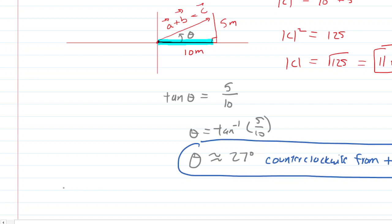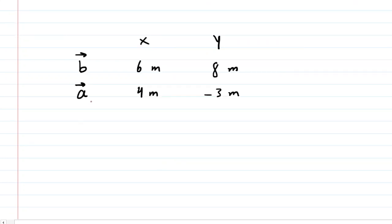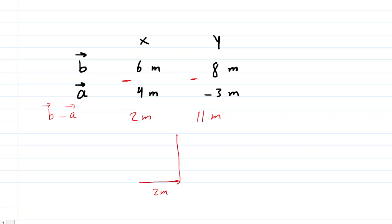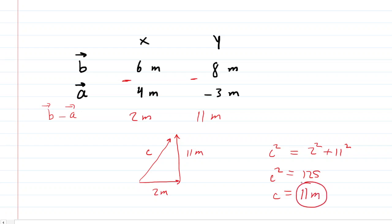Now in Parts G and H, we look at the vector difference B minus A. Setting up the table with Vector B in the first row and Vector A in the second, we subtract: X component is 6 minus 4, giving 2 meters. For Y, we do 8 subtract negative 3, which is 8 plus 3, giving 11 meters. Drawing the right triangle: 2 meters along the positive x-axis, and 11 meters up the positive y-axis. Setting up the Pythagorean theorem, C squared equals 125, and taking the square root gives 11 meters for the magnitude of B minus A. That is the correct answer for Part G.